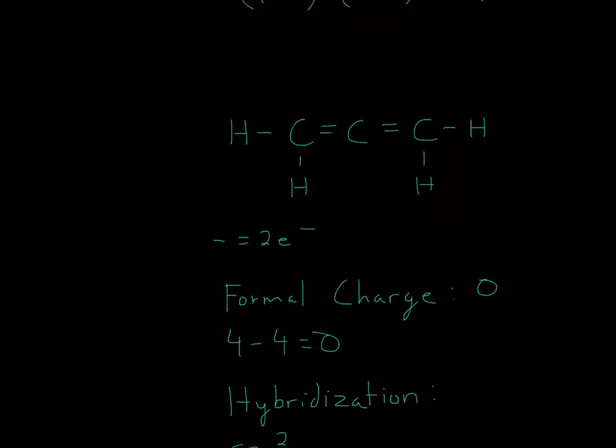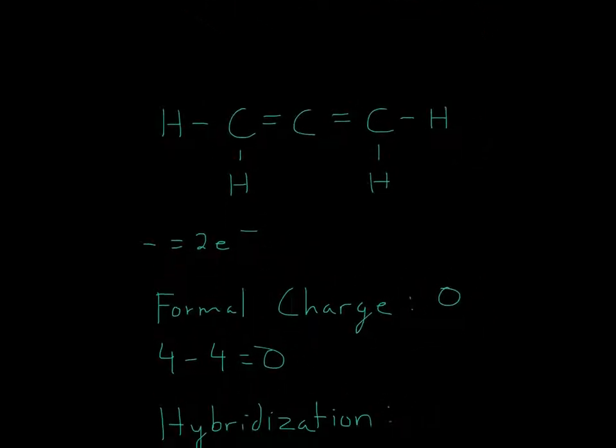So let's see why it's a 0 formal charge. So formal charge, carbon is an element 4, it's in group 4. So therefore, we'll have 4 here. And then now we just count the bonds, 1, 2, 3, 4. So 4 minus 4 will be 0.